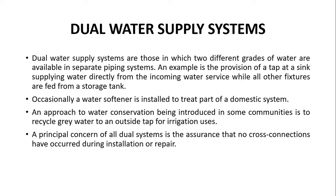A dual water supply system applies when a building receives two different grades of water — for example, fresh water from the municipal supply and water from a storage tank. For this situation, we always provide two separate piping systems. For instance, a tap at a sink may supply water directly from the incoming fresh supply, whereas all other plumbing fixtures within the apartment are fed from the storage tank. Obviously, storage tank water is not as fresh as the supply coming directly from the main municipal water supply.